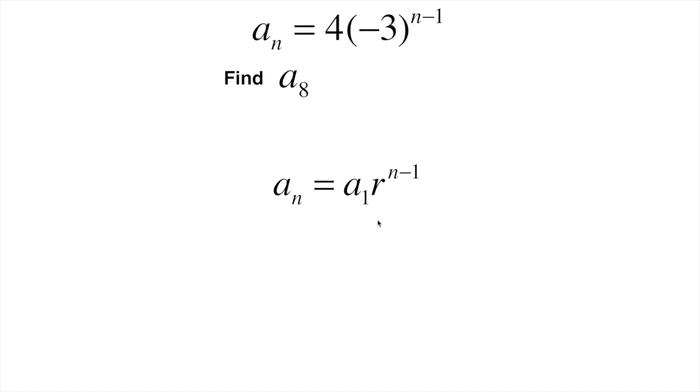So a_1, we know. This one's already kind of set out pretty nice for us. That's going to be four. The ratio, or excuse me, the n value that we're looking for here is eight. So it's going to be a_8 is what we're going to be looking for. The n value is eight. We're going to plug in eight right here and right here.